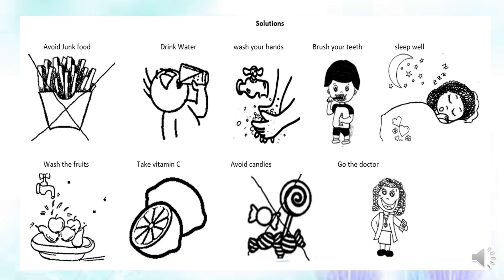Entonces, chicos, la idea es que ustedes puedan unir los papelitos que hicieron con cada una de estas soluciones. Si yo tengo fever, ¿cuál podría ser una solución? Go to the doctor. Maybe drink water. Si yo tengo, por ejemplo, toothache — dolor de dientes o dolor de muela — ¿qué debo hacer? Podría ser brush your teeth. La actividad está explicada. Entonces la van realizando en sus cuadernos o en la carpeta.